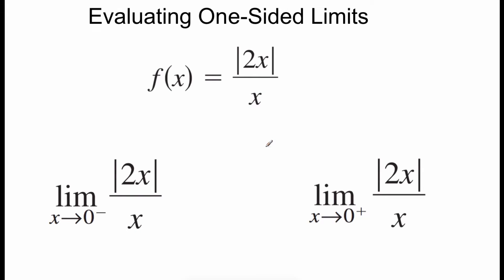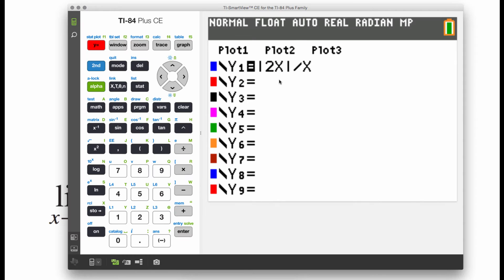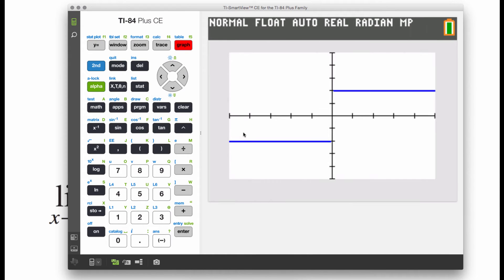So for this example, we've got the function f of x equals the absolute value of 2x over x, and I'm going to use my calculator so we can take a look at this one graphically. So on my y equals screen, I've already got our function typed in. So if I hit graph, we get a picture that looks something like this, and we want to look at this as x is approaching 0.